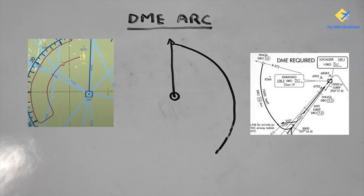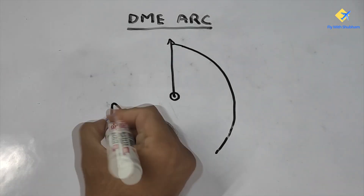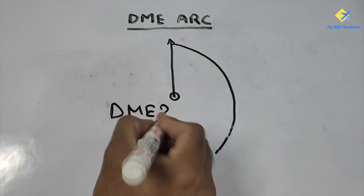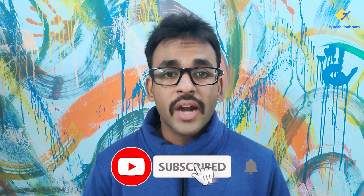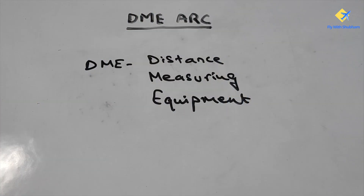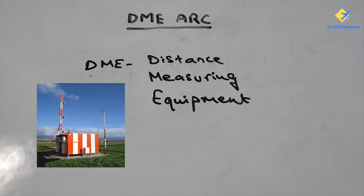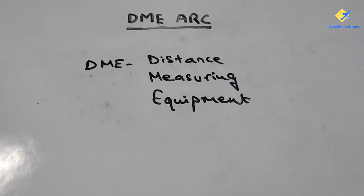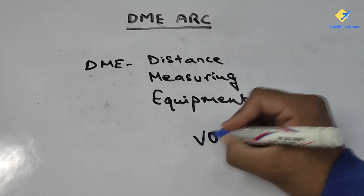This is what a DME arc looks like. Before we go ahead, we should know what a DME is. DME stands for Distance Measuring Equipment. It is basically a ground navigation device which helps us figure out our position relative to that particular station. A DME is generally coupled with a VOR as well.